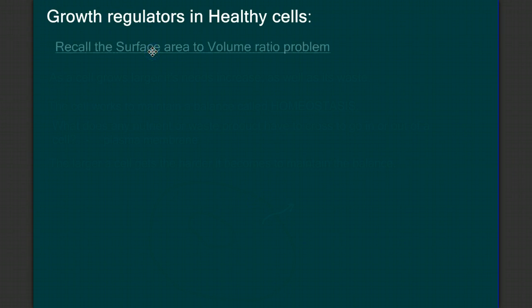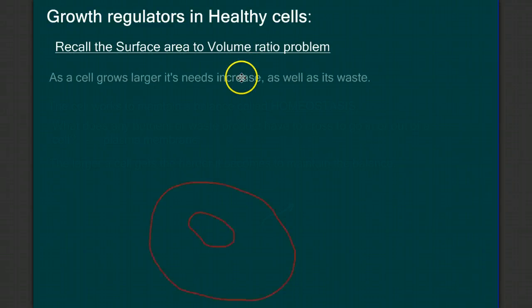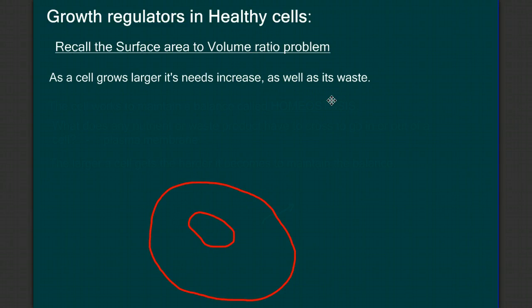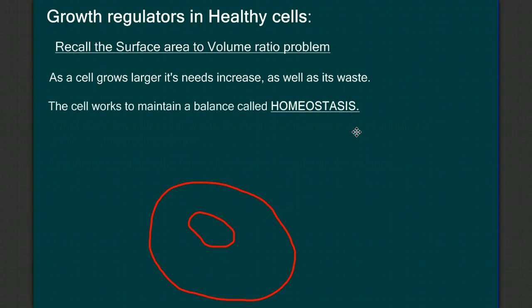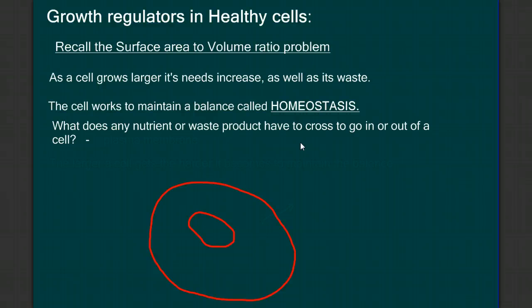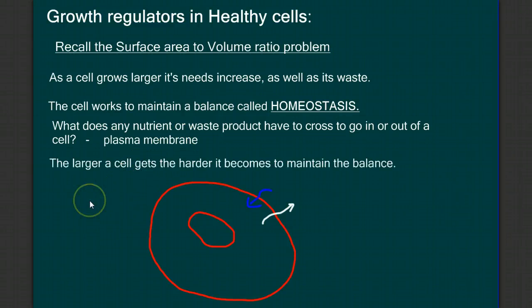So let's look at some of the factors that regulate cell growth in healthy cells. Recall from an earlier video when we talked about the parts of the cell, we discussed the surface area to volume ratio problem — that as a cell grows larger, its needs increase, as does its waste. So cells work really hard to maintain a balance. We call this homeostasis — the movement of nutrients in and waste products out. All these materials have to cross the plasma membrane, and the larger a cell gets, the harder it becomes to maintain this balance.